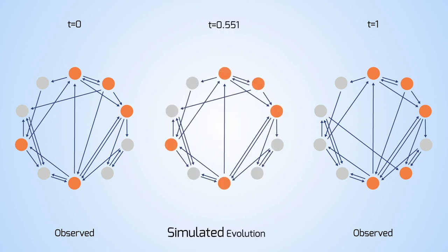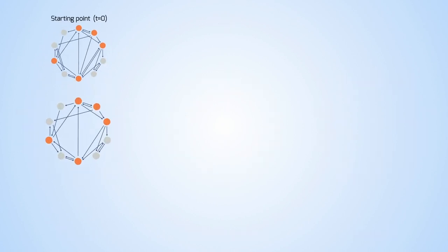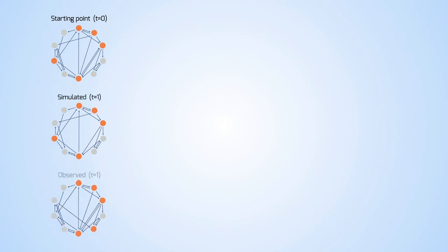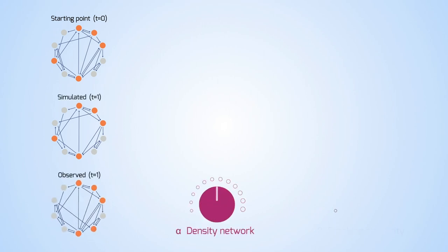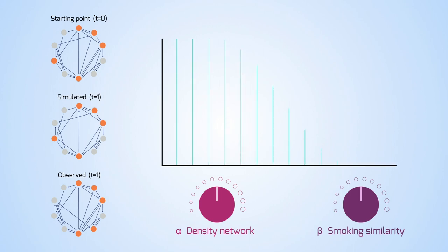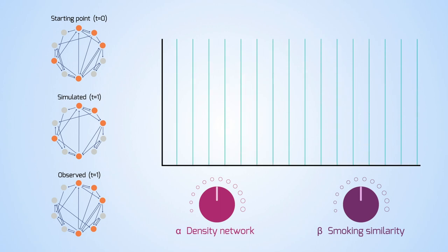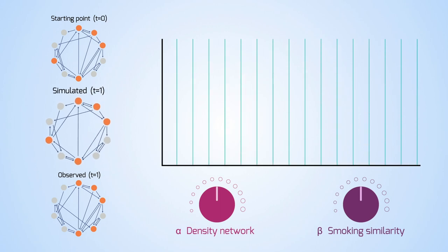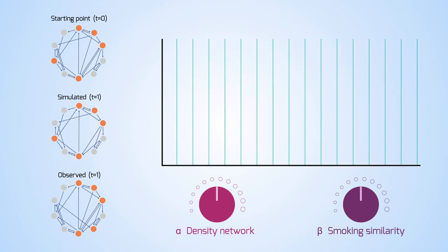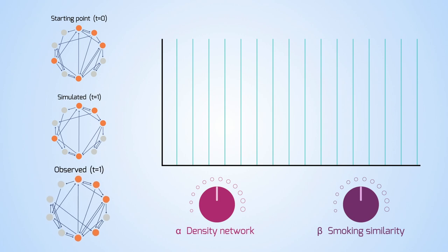However, starting from the first observed network, it's possible to simulate the evolution of the system. Consider the simple model with one parameter for the number of connections, and another parameter for copying smoking behaviour. These parameters are adjusted so that the simulated system resembles the observed one.